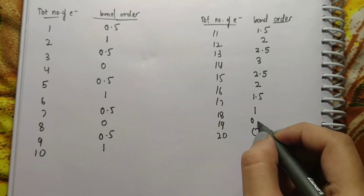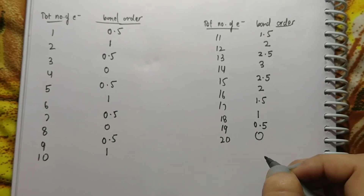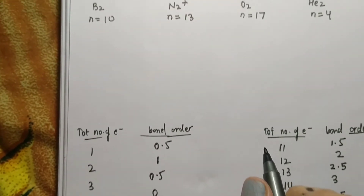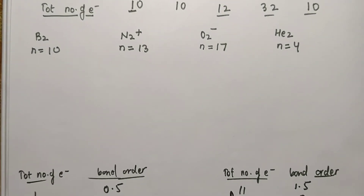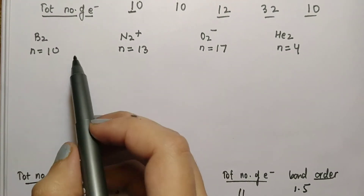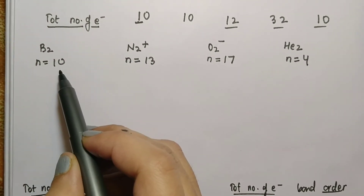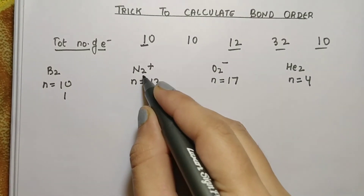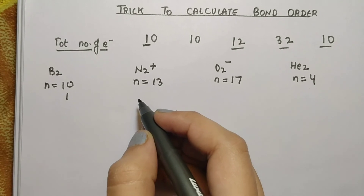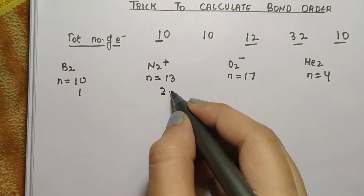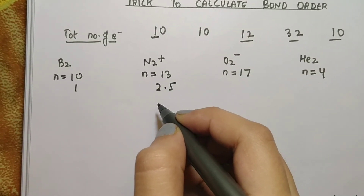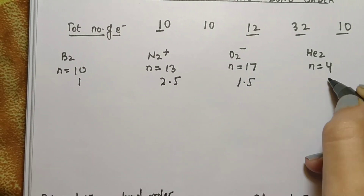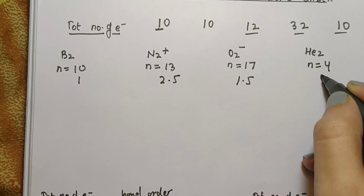So this is our whole sequence. Now we apply it to the questions. For B2, which has 10 electrons, the bond order will be 1. For N2 positive, the bond order will be 2.5. For O2 negative, the bond order will be 1.5. And for He2 molecule, the bond order will be 0.